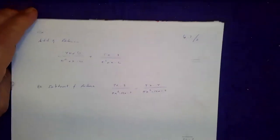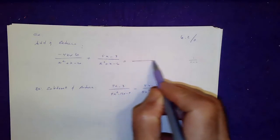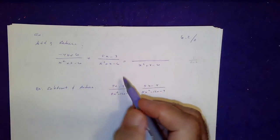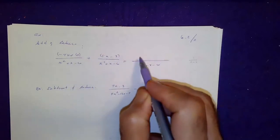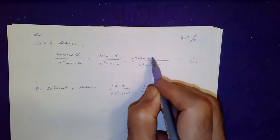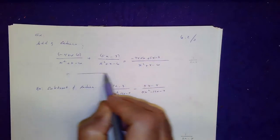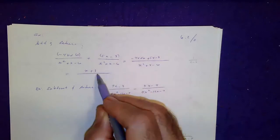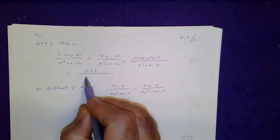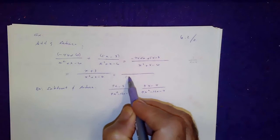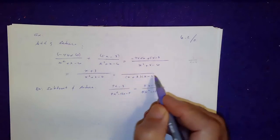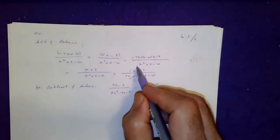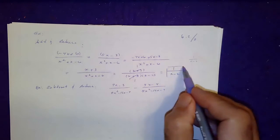Here the common denominator is x squared plus x minus 6, and you're supposed to add the two fractions. Add the two binomials: negative 4x plus 6 plus 5x minus 3. Combining like terms on top gives x plus 3. The denominator x squared plus x minus 6 factors as x plus 3 times x minus 2. The common factor x plus 3 appears, and it divides once, so the final answer is 1 over x minus 2.